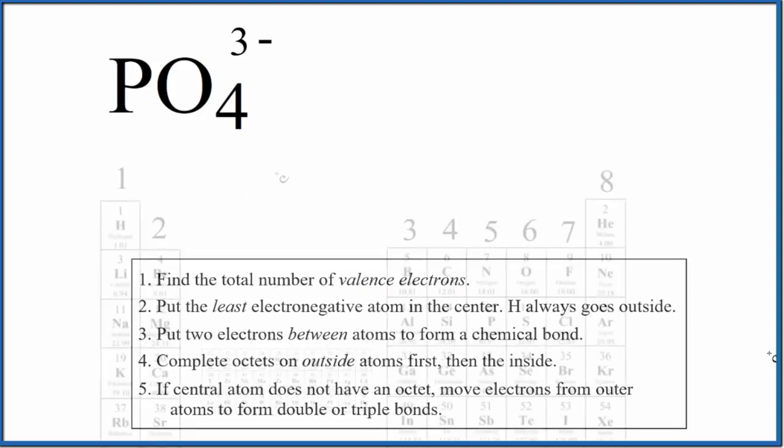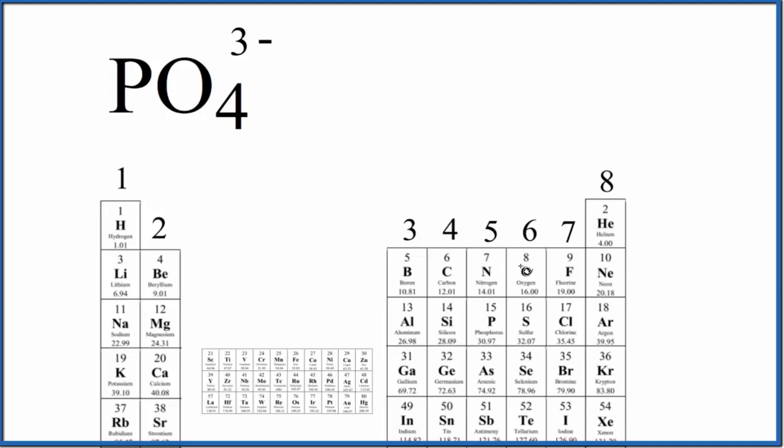So if we go to the periodic table, we can see phosphorus right here. It's in group 15, sometimes called 5A. That has five valence electrons. Oxygen, that's in group 16, sometimes called 6A. Six valence electrons, we have four oxygen atoms.